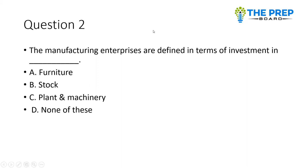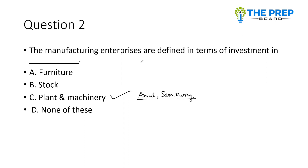Manufacturing enterprises are defined in terms of investment. The options are: furniture and stock, plant and machinery, or none of these. The correct option is 'plant and machinery.' In manufacturing enterprises, plant and machinery investment is key. We can take examples of companies like Amul, Parle-G, and Samsung — these companies have plant and machinery installed.